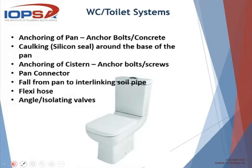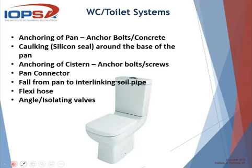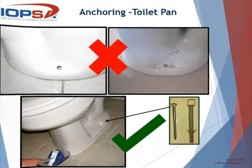Looking at water closet or toilet installations: important points include anchoring of the pan with anchor bolts, caulking around the base of the pan to prevent liquids and foreign items from entering, and anchoring of the cistern system with anchor bolts or screws. Pan connectors will be covered shortly. Also ensure the fall from the pan to the interlinking soil pipe is correct so the soil can discharge properly. Flexi hoses and isolating valves — an isolating valve is essentially a requirement for water closet installations.